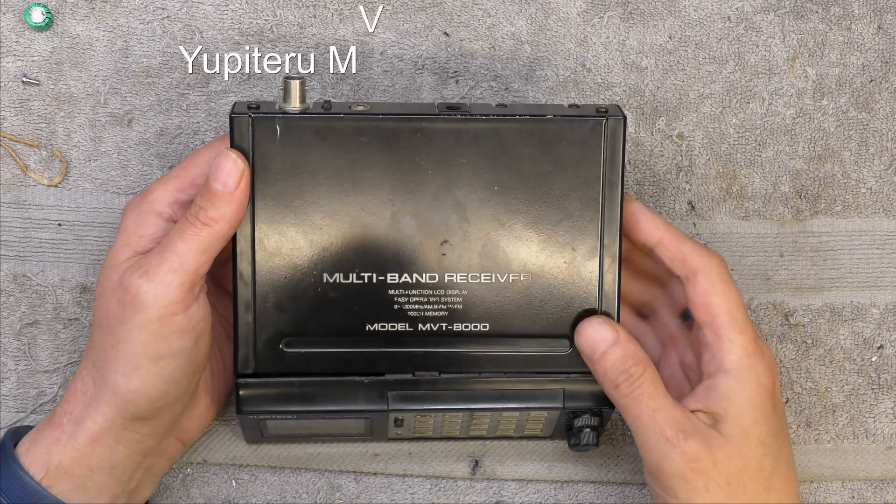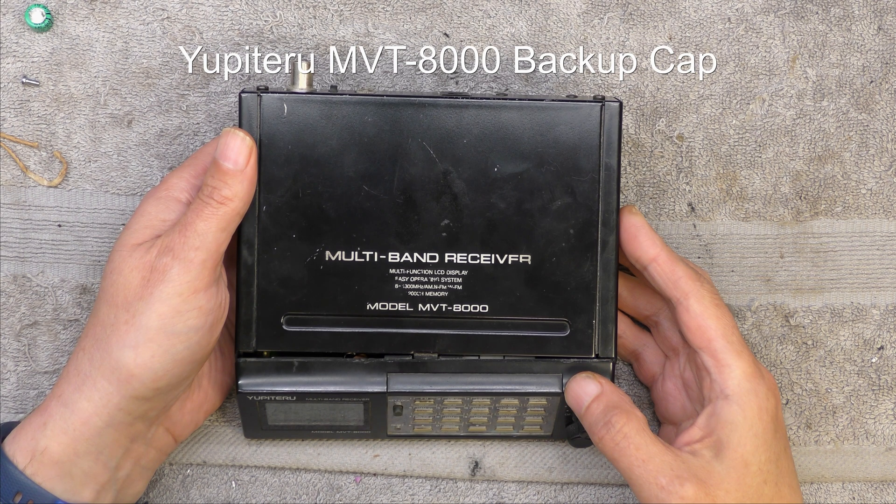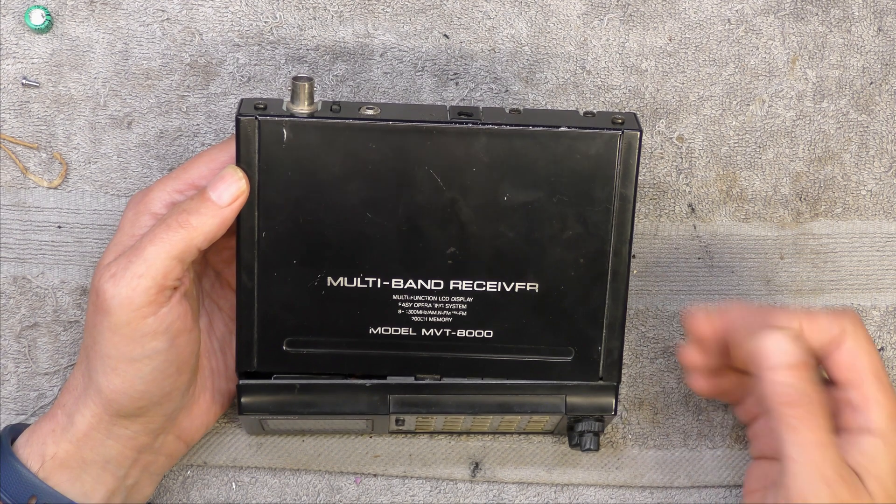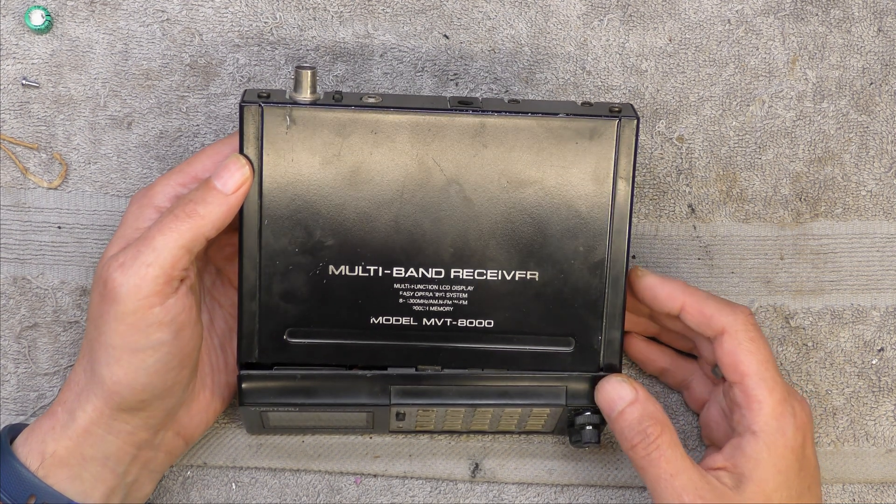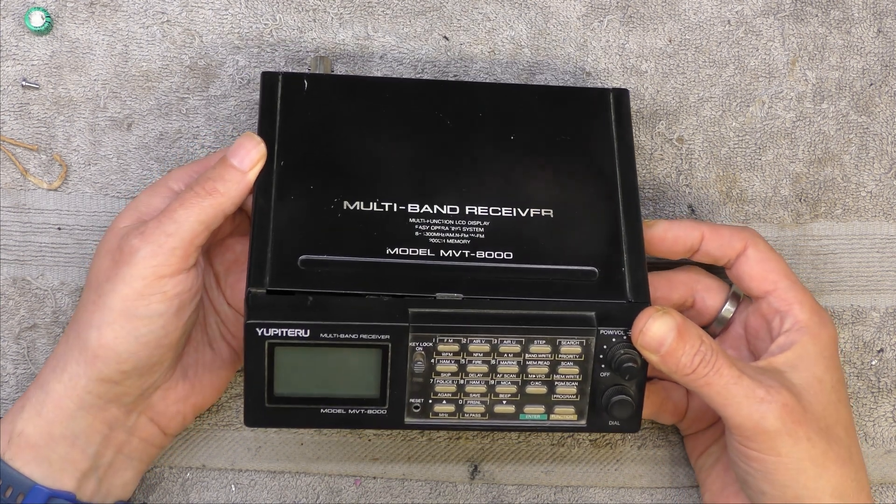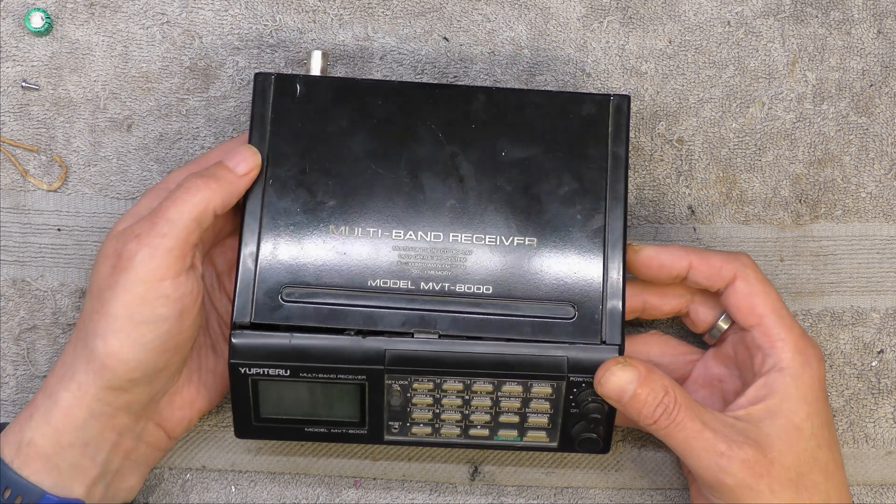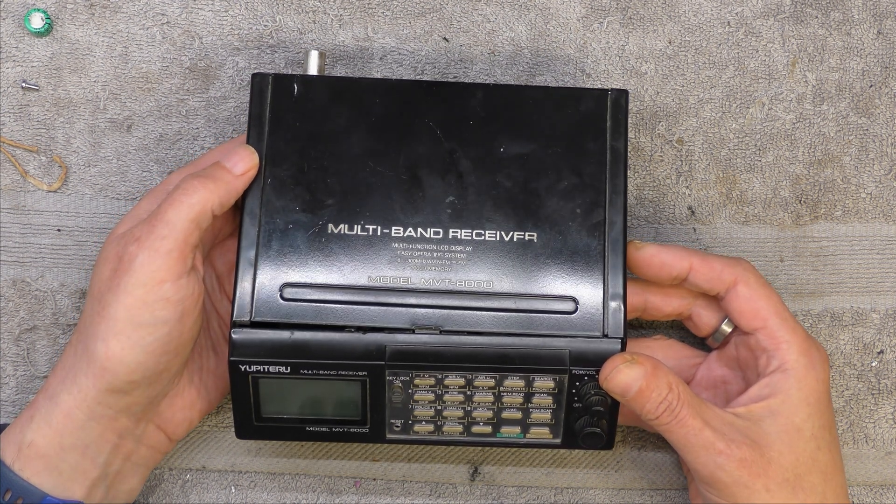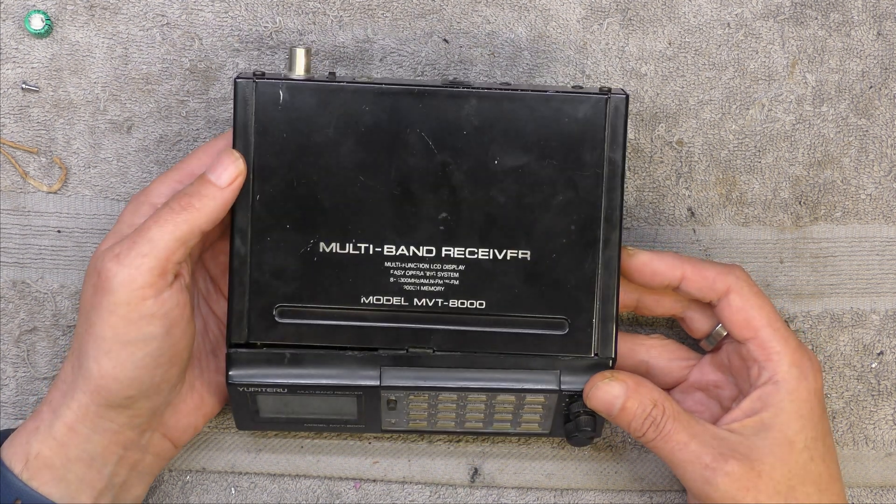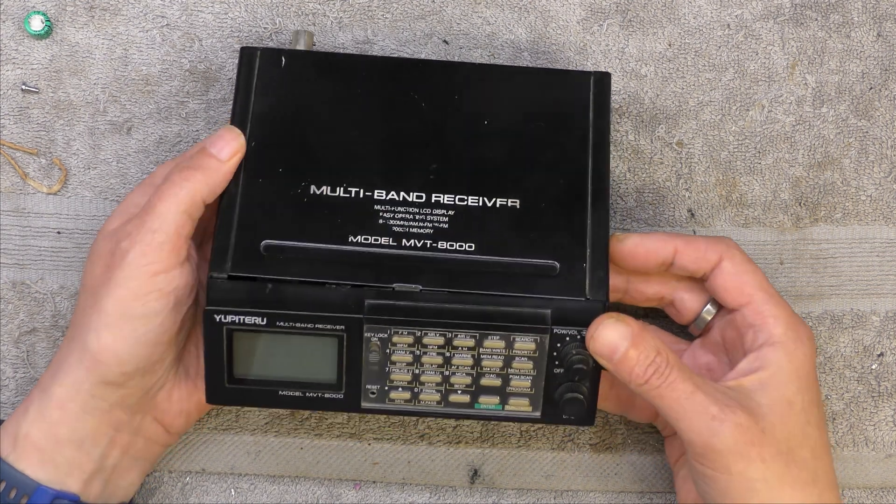Hi, I'm Daz. I've got in front of me a Yupiteru multiband receiver, a scanner. It's a model MVT-8000. Belongs to an amateur radio friend of mine. He says the memory isn't holding, and I'm led to believe that this has one of these dual layer memory backup capacitors in it. So I'm going to have a look to see where that's located and attempt to change it.